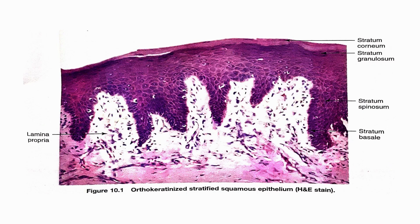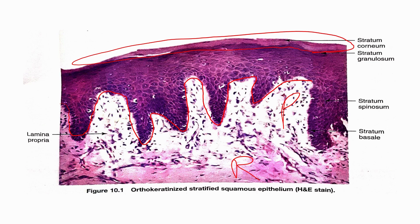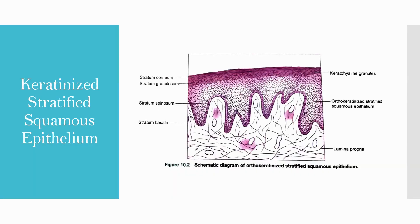Looking at the histological diagram of orthokeratin: the stratum corneum is visible; there is the basal lamina, papillary and reticular connective tissues, stratum basale, stratum spinosum, and lamina propria. The schematic diagram shows flattened cells with keratohyalin granules — dark in color — in the granular layer, lighter spinous cells, the stratum basale as the basement layer, and lamina propria with developing vessels and collagen fibers.